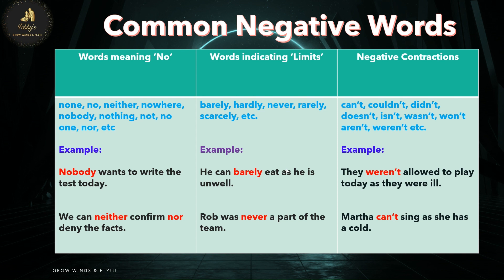Three: words which are contractions. For example: can't, couldn't, didn't, doesn't, isn't, wasn't, won't, aren't, weren't, etc. Some examples are: 'They weren't allowed to play today as they were ill.' 'Martha can't sing as she has a cold.'